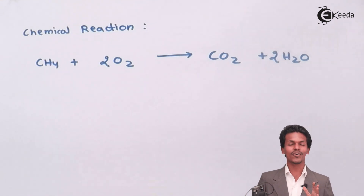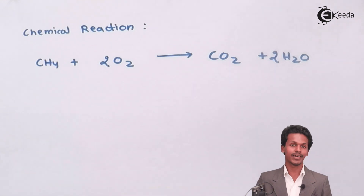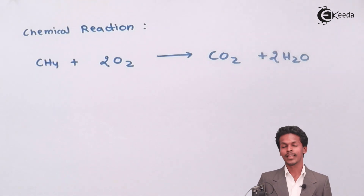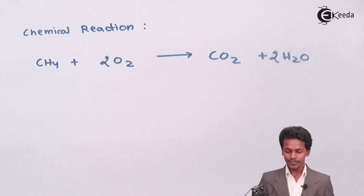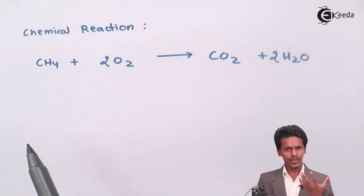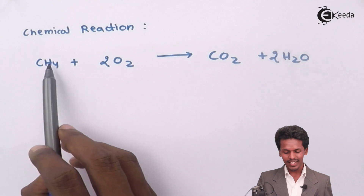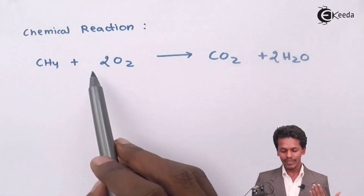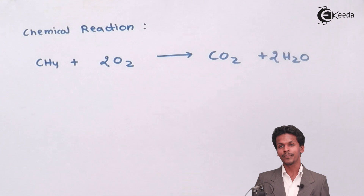This is the stoichiometry part — balancing the chemical equation. From the balanced equation, 1 mole of methane reacts with 2 moles of oxygen to produce 1 mole of carbon dioxide and 2 moles of water.